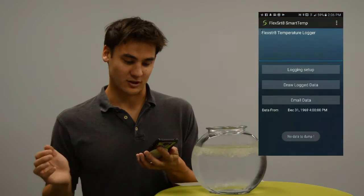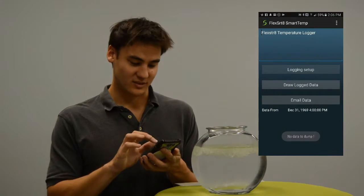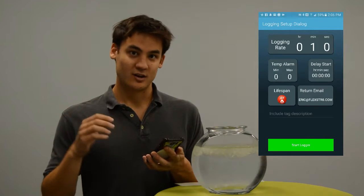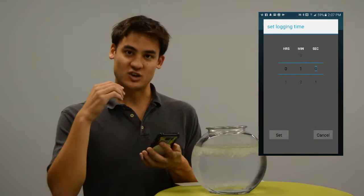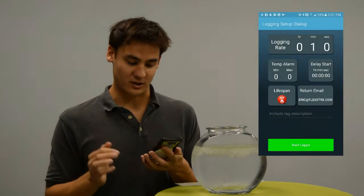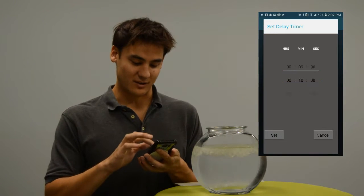To use it, simply place your Android device on the temperature label, that will pop right up. Next, hit Logging Setup to configure the logger. I'll set this logger to check the temperature at a rate of every one minute. I'll also delay the start of the logger by 10 minutes.